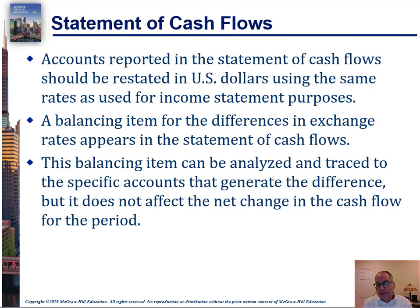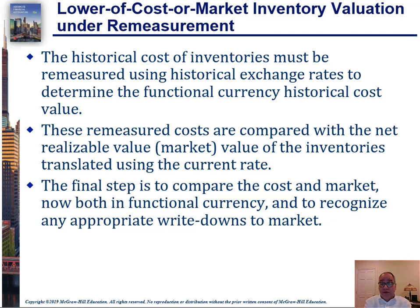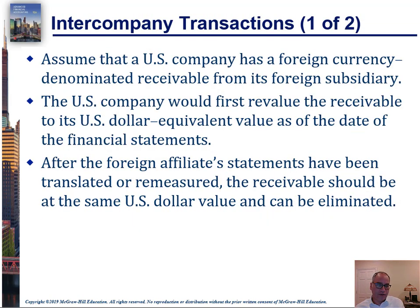It says here it can be analyzed and traced to specific accounts to generate the difference. Under remeasurement, lower-of-cost-or-market inventory valuations need to be done as if they had been done at the historic rate. The historic cost of inventories must be remeasured using historical exchange rates to determine the functional currency historical cost value. So if you're going to use lower-of-cost-or-market, which you're required to use, you need to use remeasured amounts using the functional currency rather than the original amounts using the book currency. The cost, the market price minus selling costs, the ceiling and the floor — all of that needs to be done using the functional currency and not the original currency.